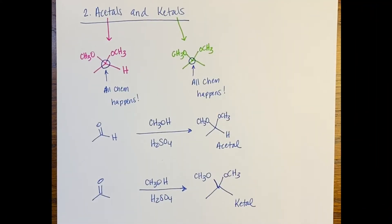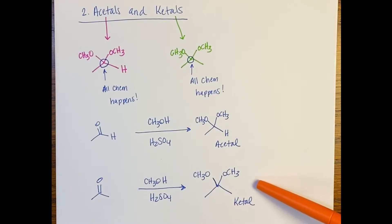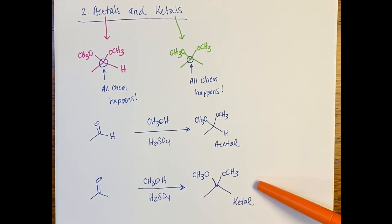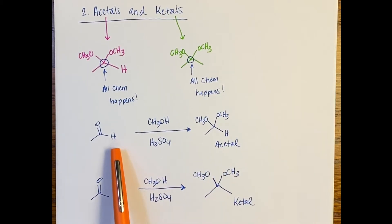So we just went through the mechanism for the formation of the acetal. Now I want you to go through the mechanism for the formation of the ketal on your own. Notice that the only difference in these mechanisms is the fact that this hydrogen is present in the acetal and it's a methyl group in the ketone.